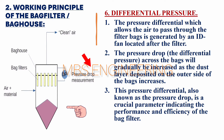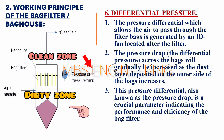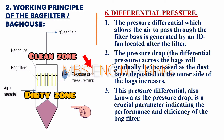Please refer to the bag house system differential pressure transmitter, which is used to show the pressure drop between the clean gas zone side and the dirty gas zone side. The pressure drop across the bags gradually increases as the dust layer on the outer side of the bags increases.